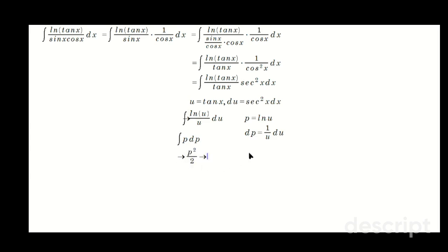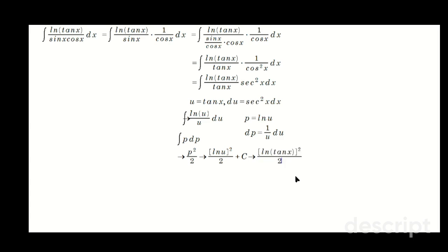So it's going to be p squared over 2. But now p is ln of u. So you're going to have, let's be careful here, ln of u, quantity squared, over 2. Let's add the c. But then remember u we said to be tan x. So it's going to be the following: ln of tan x, all of this squared over 2 plus c. There you go.